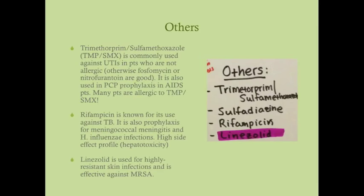Trimethoprim-sulfamethoxazole (TMP-SMX, Bactrim) is the drug of choice for UTIs unless contraindicated. Do not use in pregnancy because it blocks folate. If the patient is allergic, use fosfomycin or nitrofurantoin instead. TMP-SMX is also used for PCP prophylaxis in HIV/AIDS patients (Pneumocystis jirovecii pneumonia); if allergic to TMP-SMX, use dapsone for PCP prophylaxis.